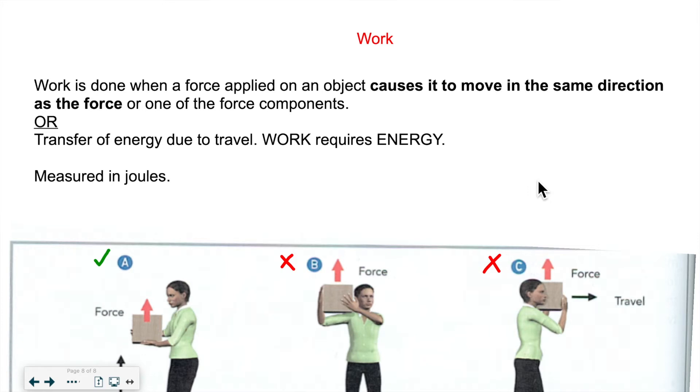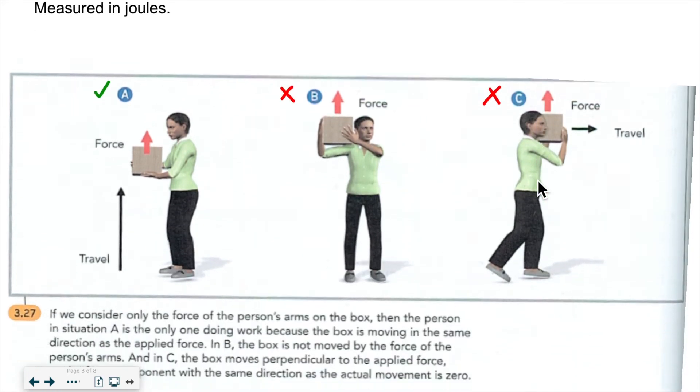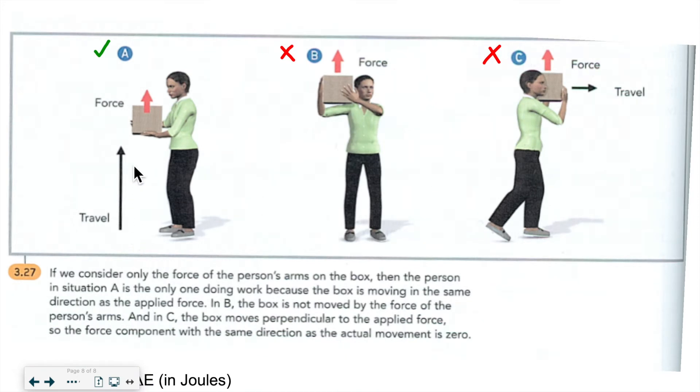So here we have three situations. We have a person lifting a box, so the object is traveling in this direction and the force is also in this direction. The force is applied upwards, the person is lifting the box and the box is also traveling upwards. So because the two are in the same direction, this would be an example of work. Now if a person is just holding the box in place, there's a force being used because we have to hold the box, so the force is upwards.